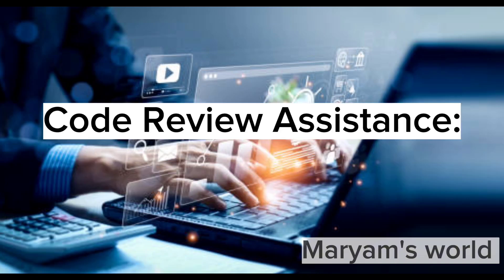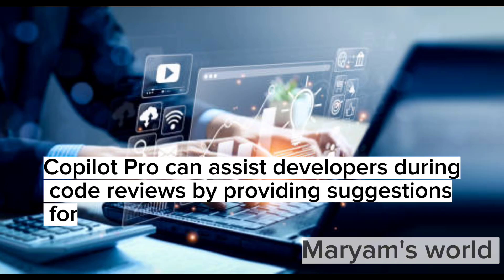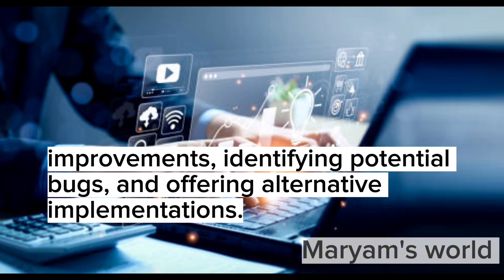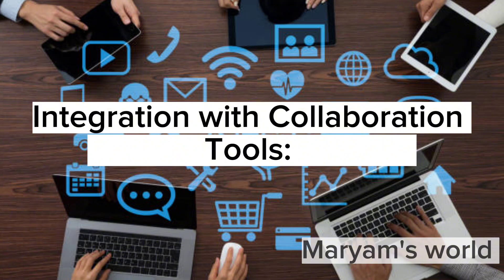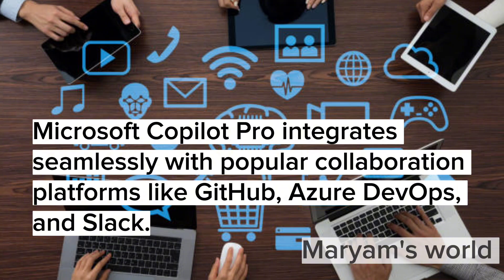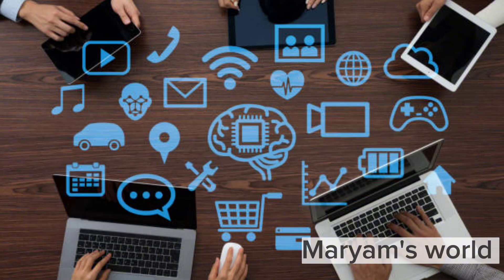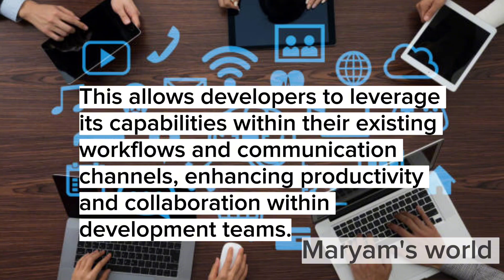Code Review Assistance: Copilot Pro can assist developers during code reviews by providing suggestions for improvements, identifying potential bugs, and offering alternative implementations. Integration with Collaboration Tools: Microsoft Copilot Pro integrates seamlessly with popular collaboration platforms like GitHub, Azure DevOps, and Slack. This allows developers to leverage its capabilities within their existing workflows and communication channels, enhancing productivity and collaboration within development teams.